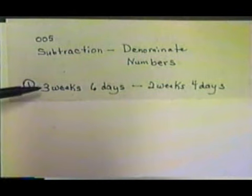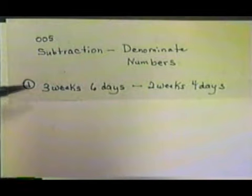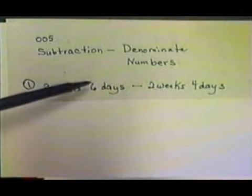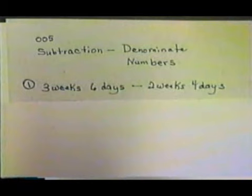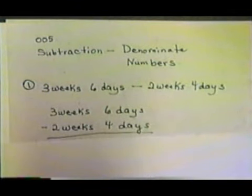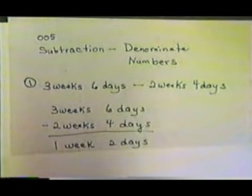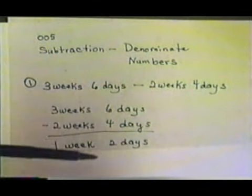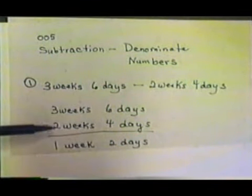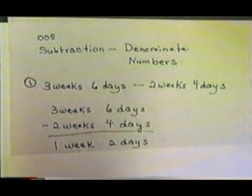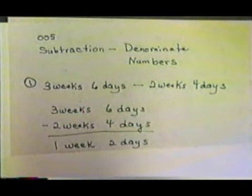Let's begin with this problem. We're going to work with time and subtraction. We have 3 weeks, 6 days, and from that we want to subtract 2 weeks, 4 days. So we line things up, put our days together and our weeks, and we just subtract like normal. 4 days from 6 days leaves 2 days, 2 weeks from 3 weeks leaves 1 week. There was nothing we needed to borrow, so that was just a standard problem — we subtracted days from days and weeks from weeks.